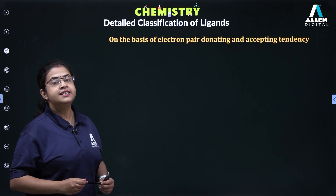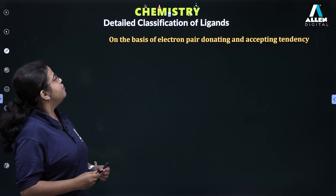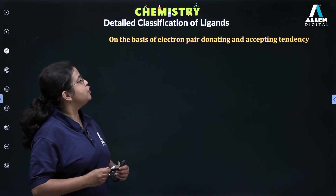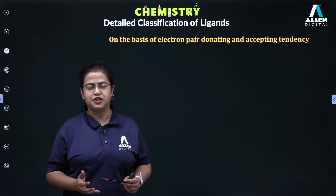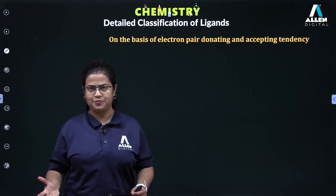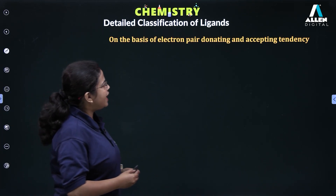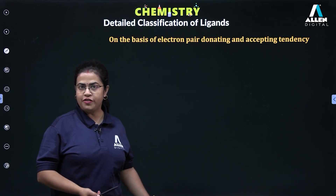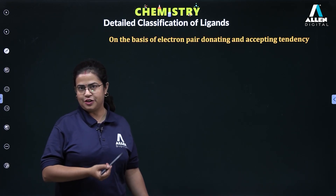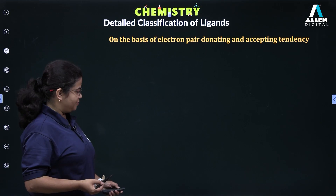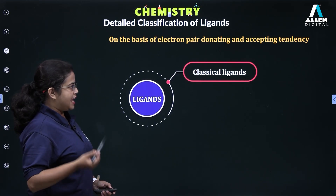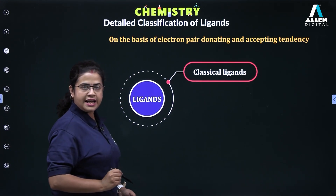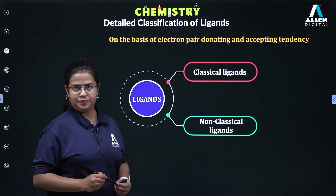Today we are discussing another basis of classification of ligands in order to study synergic bonding. Here we are going to classify ligands on the basis of their electron pair donating and accepting tendency. Wait — electron pair donors are ligands, that's what we know so far. How can they have accepting tendencies? How can ligands accept electron pairs? That is what we are going to find out.